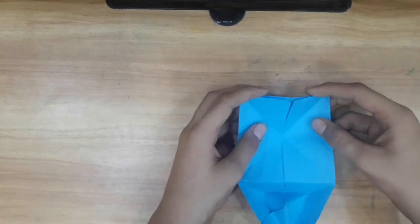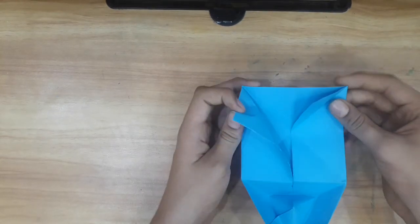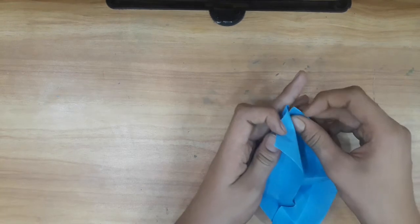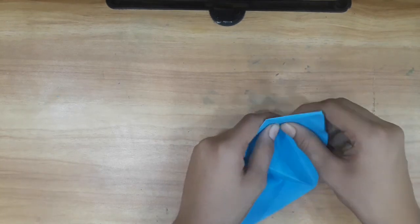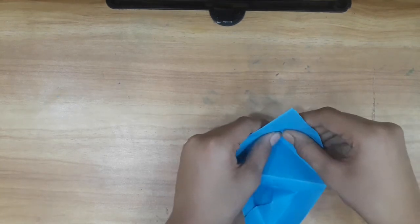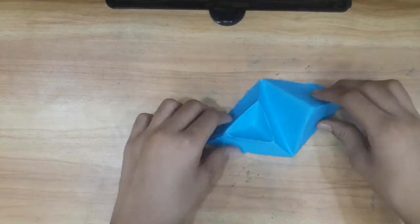Now we have to take this side. We have to do the same. We have to open one door and make these corners like this, and then close the door. So we have done.